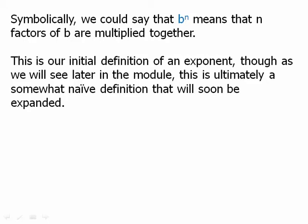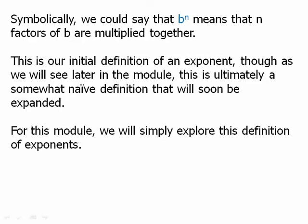And why is it naive? Well, if you think about it, how many factors of b are multiplied together means that n is a counting number. That is to say, it is a positive integer. And so this definition, this way of thinking about exponents is perfectly good as long as the exponents are positive integers. But as we will see in upcoming modules, there are all kinds of exponents that are not positive integers. We'll talk about negative exponents and fraction exponents. Let's not worry about that in this module. This module will just stick with the positive integers, so we can stick with this very intuitive definition of what an exponent is.